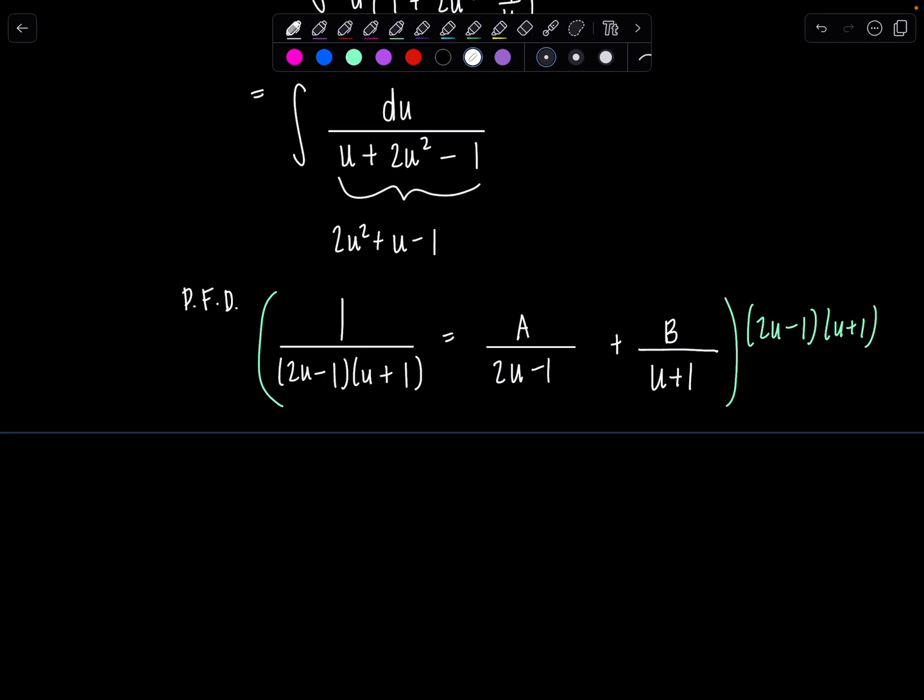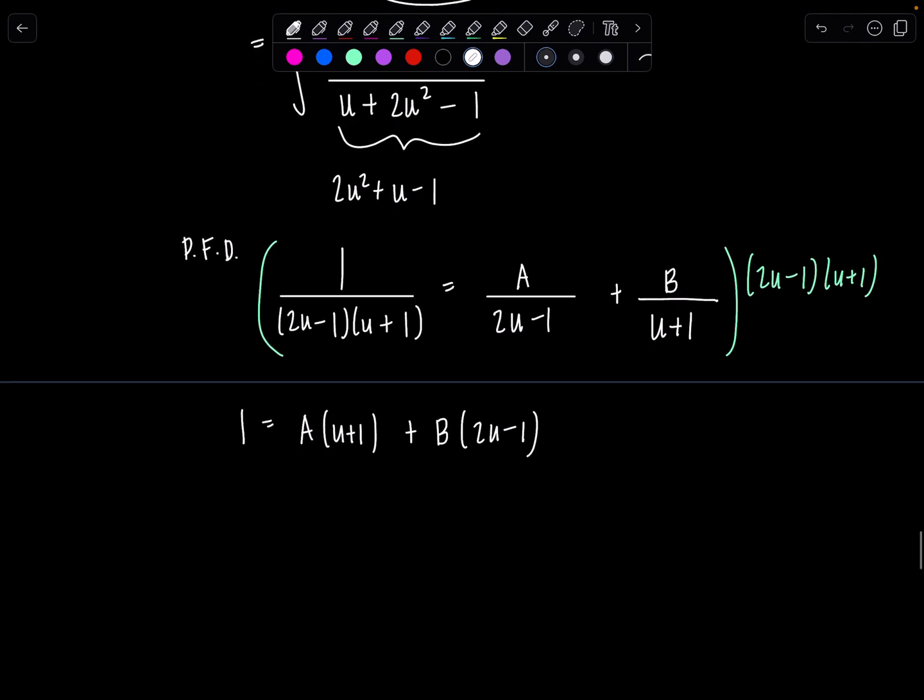So let's see here. 1 equals a times u plus 1 plus b times 2u minus 1. And you can distribute and create a system of equations or we can just come through right now and substitute in. Let's let u equal negative 1.